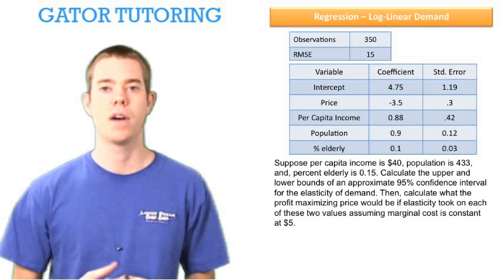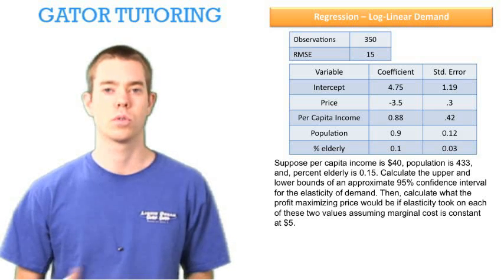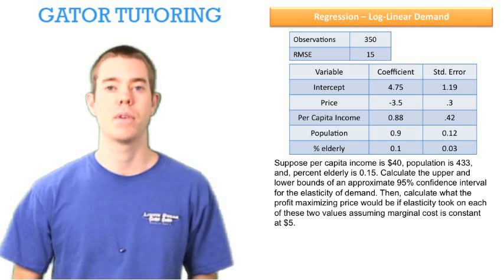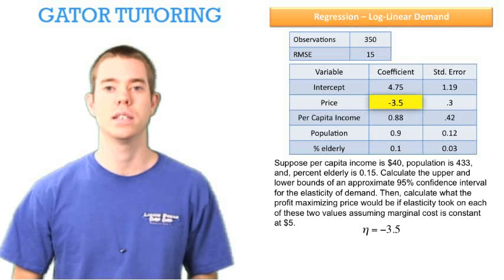Usually we're asking about 95% confidence intervals for the log of quantity demanded or quantity demanded. Now we're asking about the elasticity of demand. With log-linear regression, the elasticity of demand is equal to the price coefficient. In this case, eta is equal to negative 3.5.